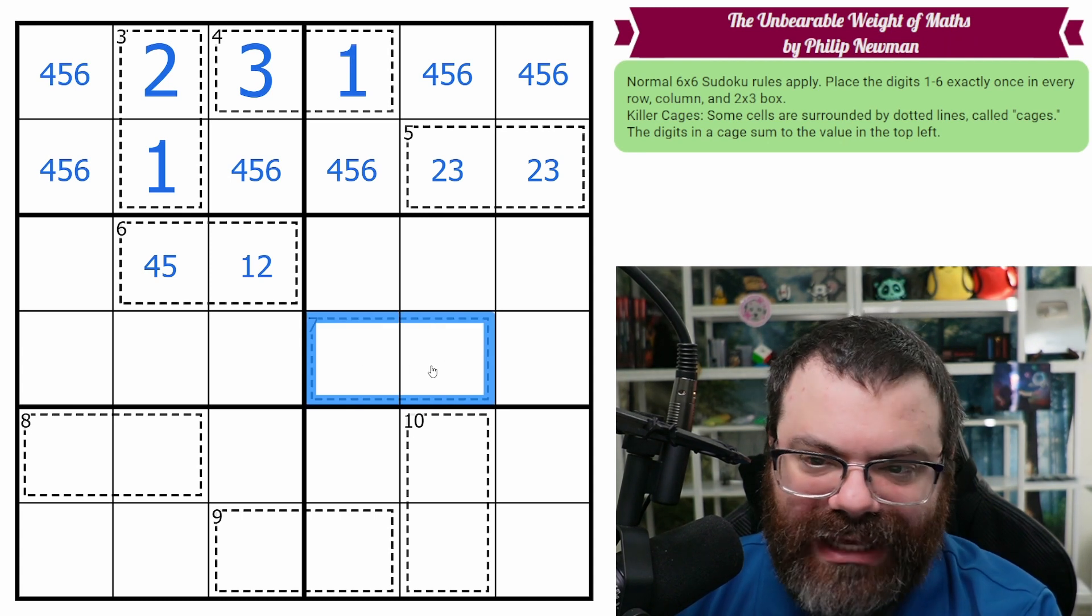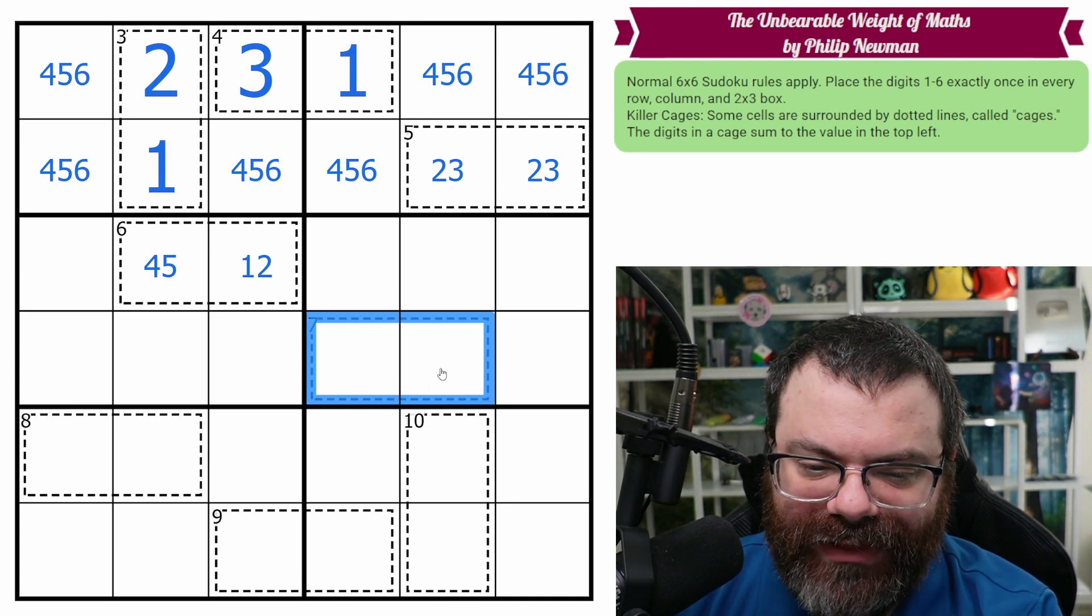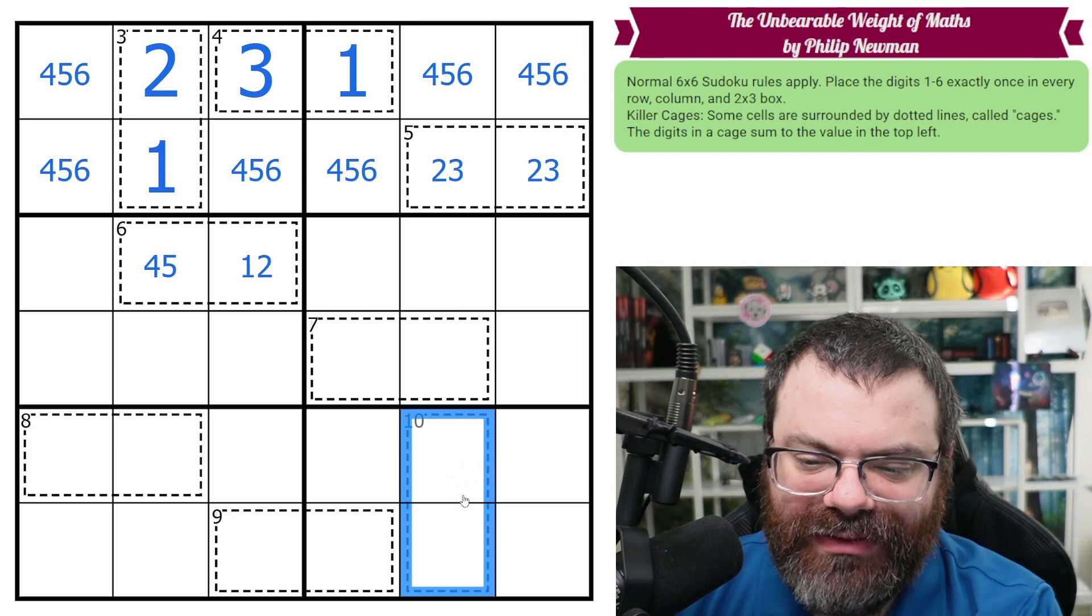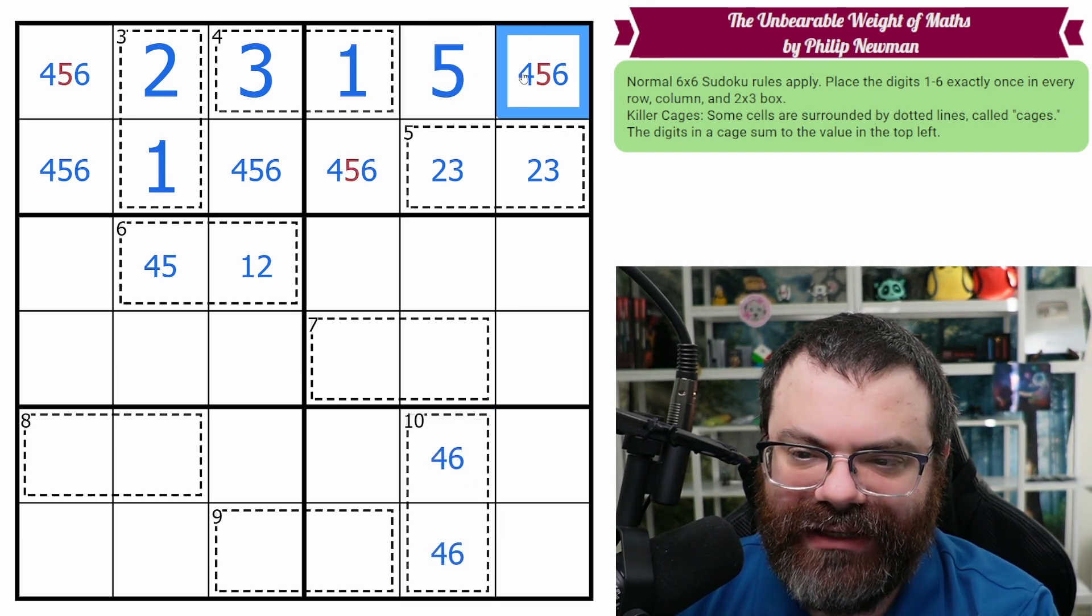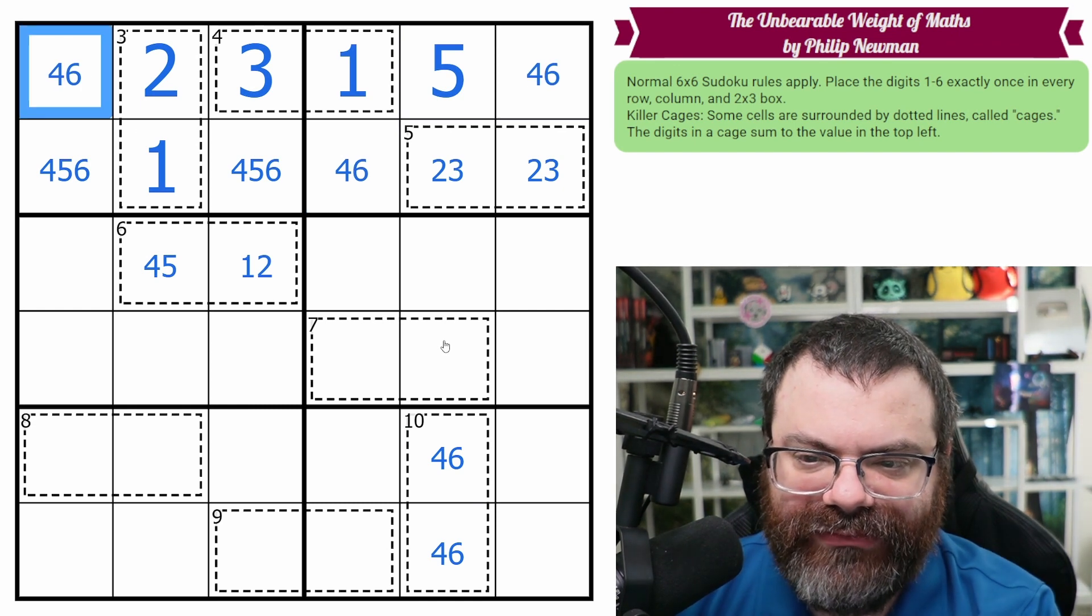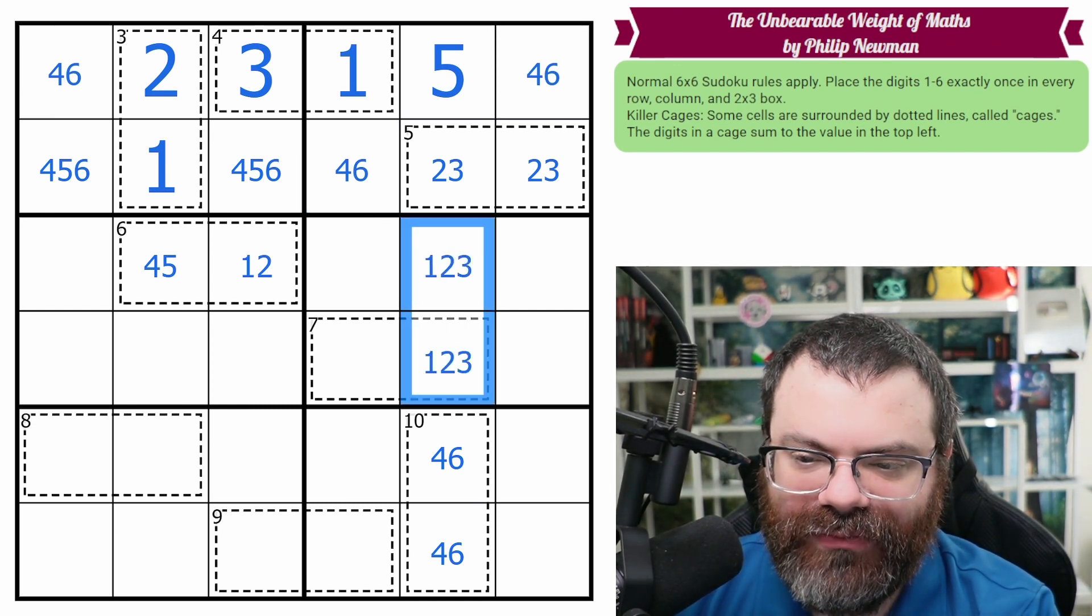7 has every possible way to do it, so I'm not going to fill that right now. Let's actually work backwards from the 10 now. So the 10 has to be 4-6. Okay, so that 4-6 looks up, giving us this 5. None of these are 5s. These are from 1-2-3.